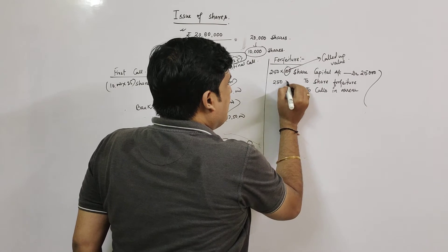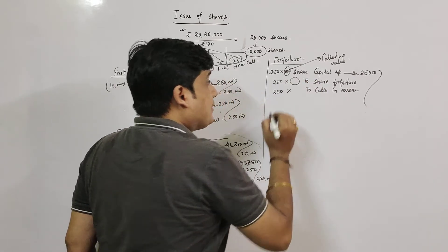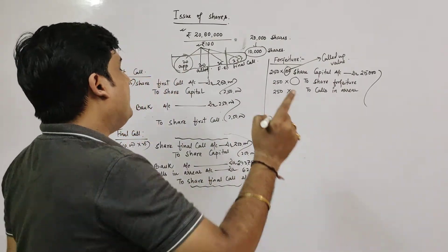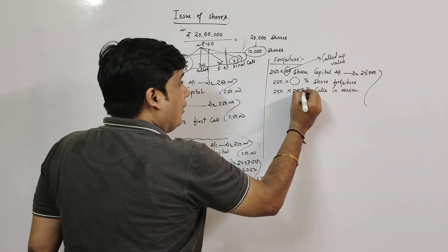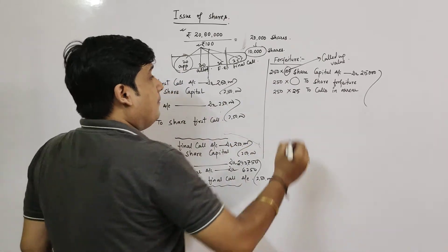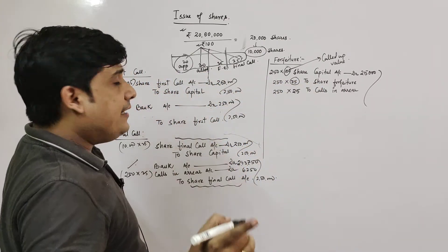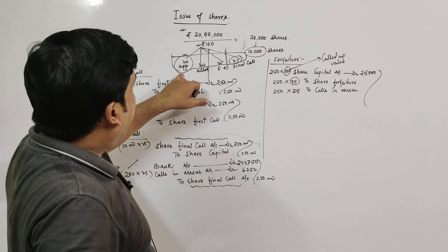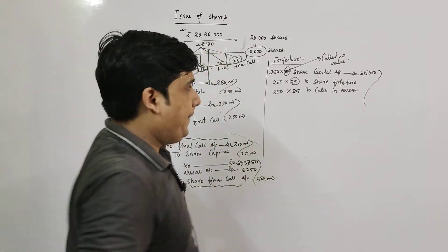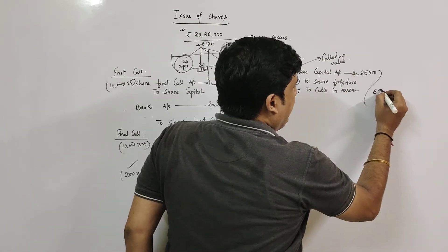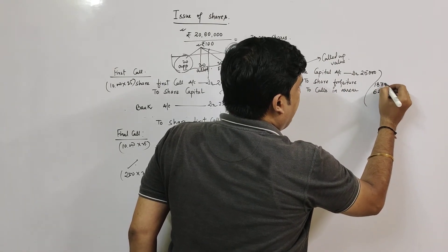Share Forfeiture is for the money actually received — this shareholder paid application + allotment + first call = ₹75 per share. So Share Forfeiture = 250 × ₹75 = ₹18,750. Calls-in-Arrears = 250 × ₹25 = ₹6,250. In forfeiture, the company benefits — it keeps both the shares and the money already paid.